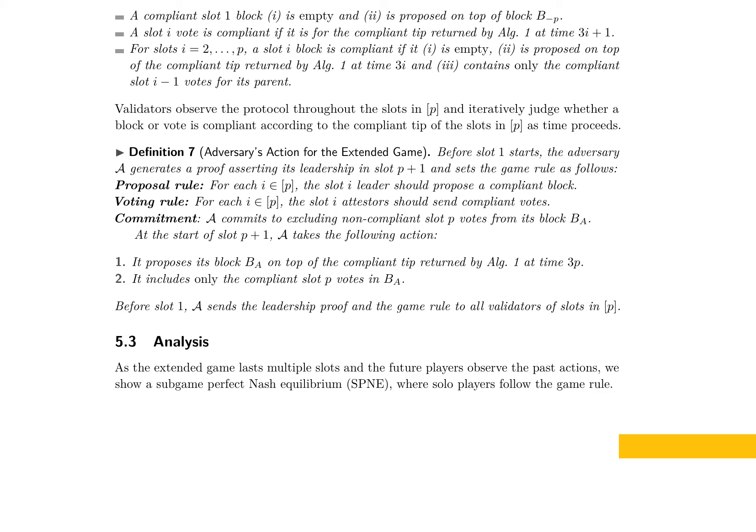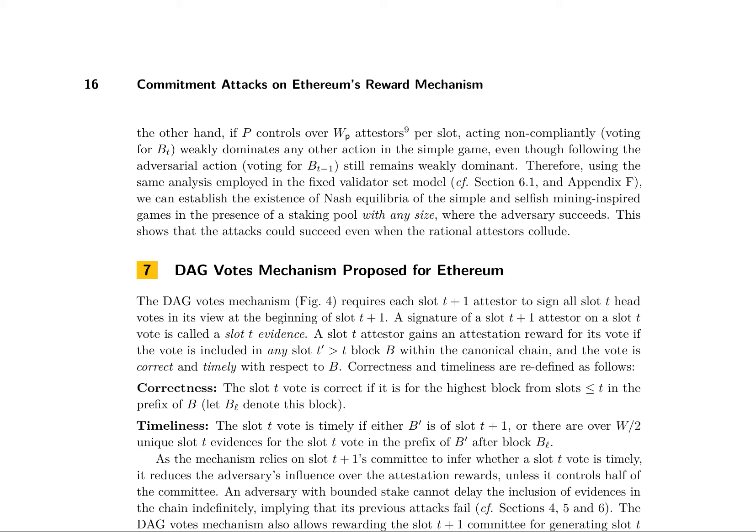In the context of Ethereum's reward mechanism, the behavior of staking pools in the presence of attacks is analyzed. A staking pool is modeled as a single entity controlling a fixed number of votes in each slot, with a payoff equal to MR, where M represents the number of votes controlled by the pool and R is the reward for a single correct and timely head vote. The authors show that VP weakly dominates NVP, implying that acting compliantly is a better strategy for the staking pool. However, if the pool controls over WP attesters per slot, acting non-compliantly weakly dominates any other action, leading to the existence of Nash equilibria where the adversary succeeds. The authors propose the DAG votes mechanism as an alternative to Ethereum's current reward mechanism.